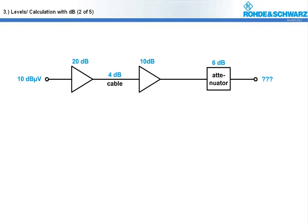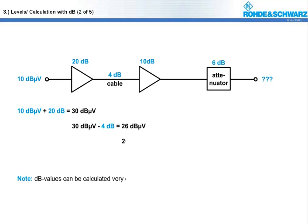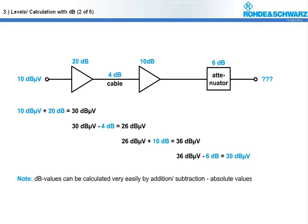In the graphic you see a sequence with two amplifiers, an attenuator and a cable with losses, which has different amplification or attenuation factors. The big advantage of ratios and levels in dB or dB microvolt respectively is that such chains of components can be calculated very easily by addition or subtraction of the corresponding dB values. Care has to be taken of the pseudo units because 20 dBm minus 10 dBm is not 10 dBm but 10 dB.